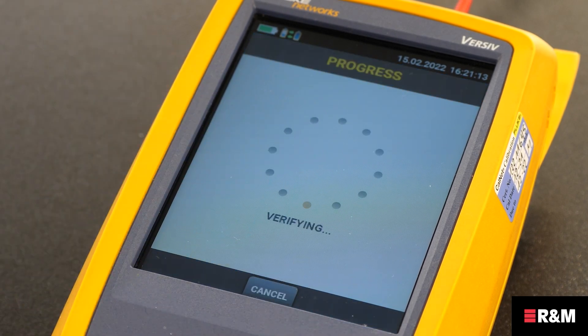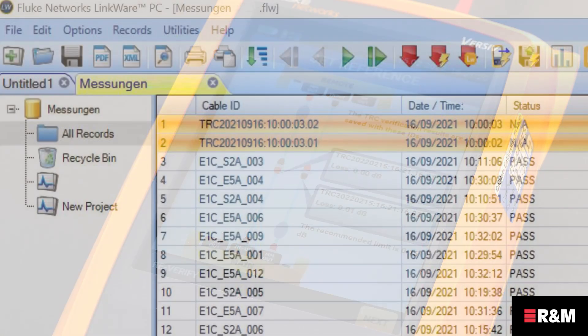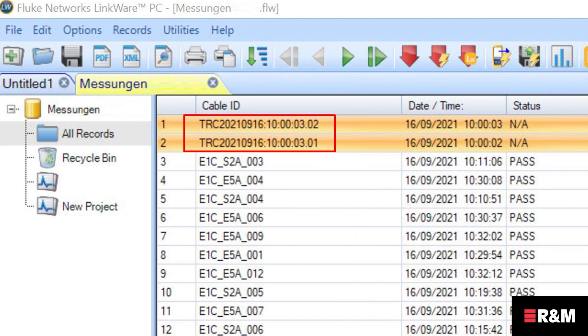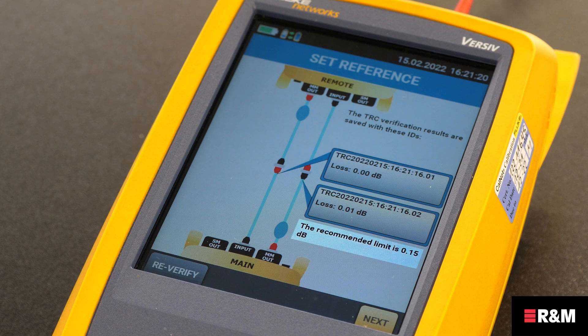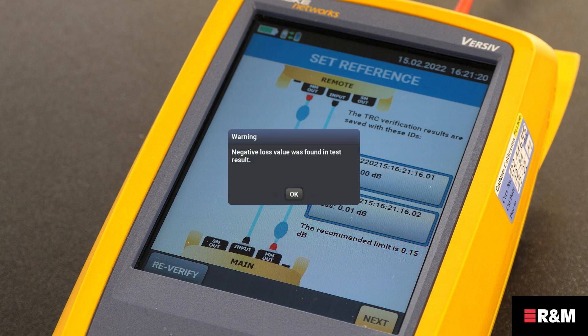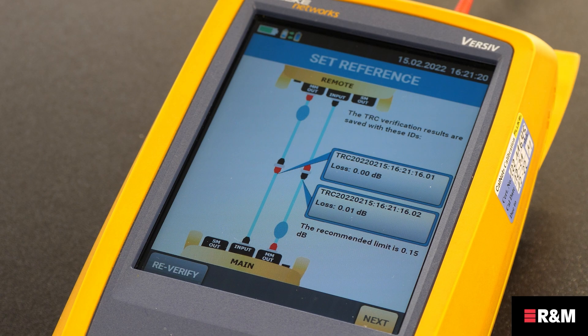Tap TRC verification. The tester measures and saves the loss of the test reference cords you added. The IDs for these results begin with TRC and show the date and time of the test. They show an eye for information only as a test result. The tester shows a warning if the loss of a TRC is more than their allowable limits. The standards state the limits as 0.1 dB for multi-mode and 0.2 dB for single-mode, whereas these fluke devices state the limits as 0.15 dB for multi-mode and 0.25 dB for single-mode. If the tester shows a warning, clean and inspect the connectors on the TRCs, then redo the TRC verification again.